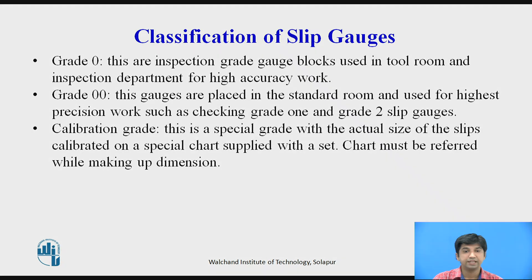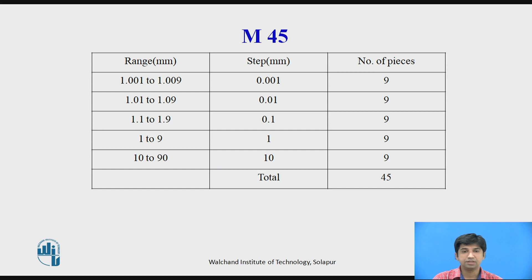There is also a calibration grade — a special grade with the actual size of each slip calibrated on a special chart supplied with the set; this chart must be referred to when making up a dimension. The sets studied in the last lecture are M45 and M83, named based on the number of pieces in each set.